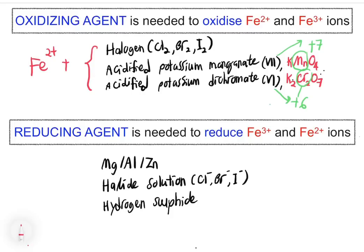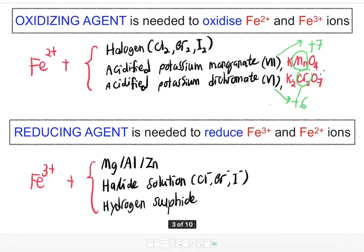Reducing agents are substances that undergo oxidation while causing the other substance to undergo reduction. Common examples are metals such as magnesium, aluminium, and zinc, as well as halide solutions such as Cl⁻, Br⁻, and I⁻, and hydrogen sulfide. These reducing agents react with Fe3+ so that Fe3+ undergoes reduction to Fe2+ ion.